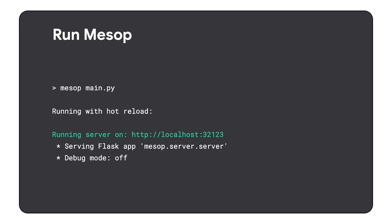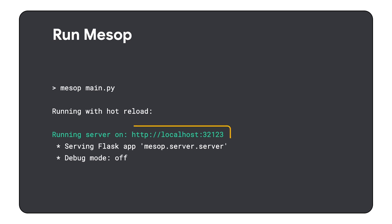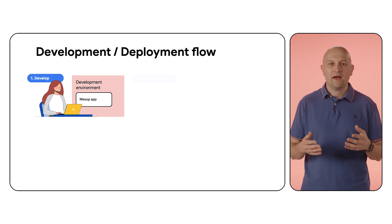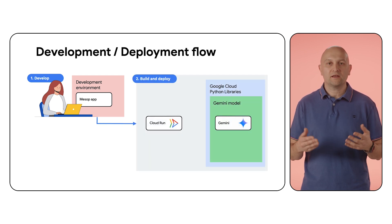After these couple of steps, you should be able to successfully run mesop main.py. If everything starts successfully, you'll see a summary similar to the one presented here. You can open and explore the application via the localhost link. Notice that by default, Mesop runs with hot reloading on. This means that every time you make a change in your code, it's going to be visible on the site without a need to restart the application — pretty sweet! At this point, you have a working local version of the app which uses Gemini from Google Cloud. I encourage you to explore and modify the code and see how it behaves.